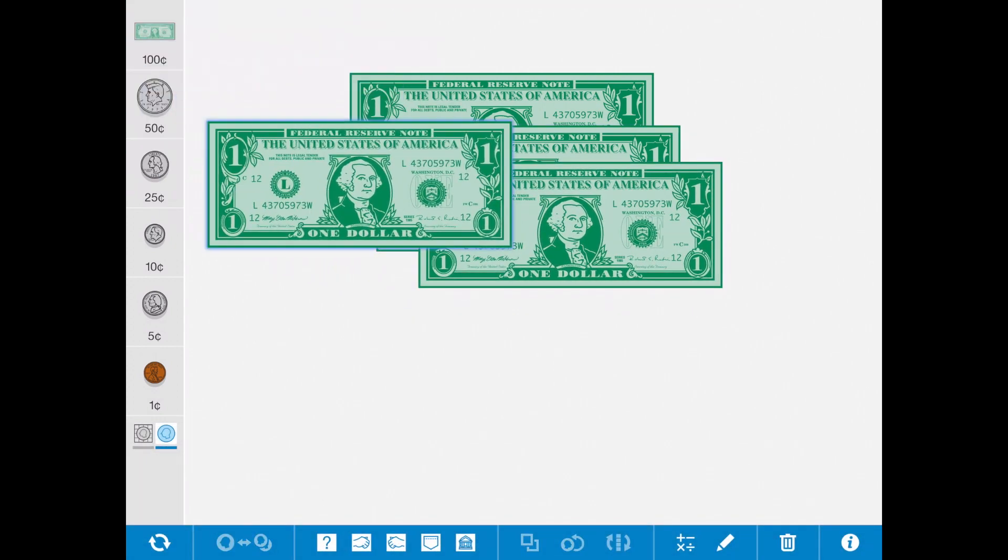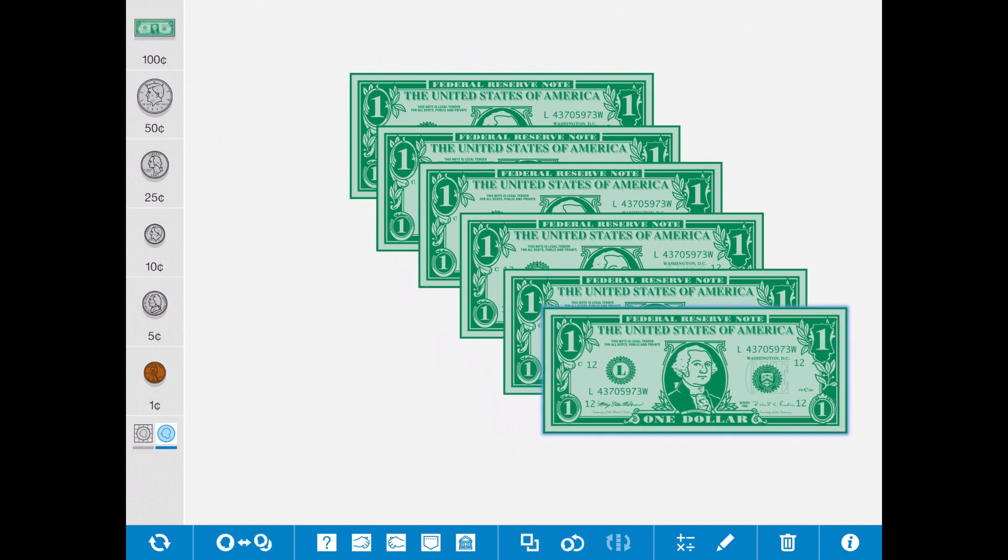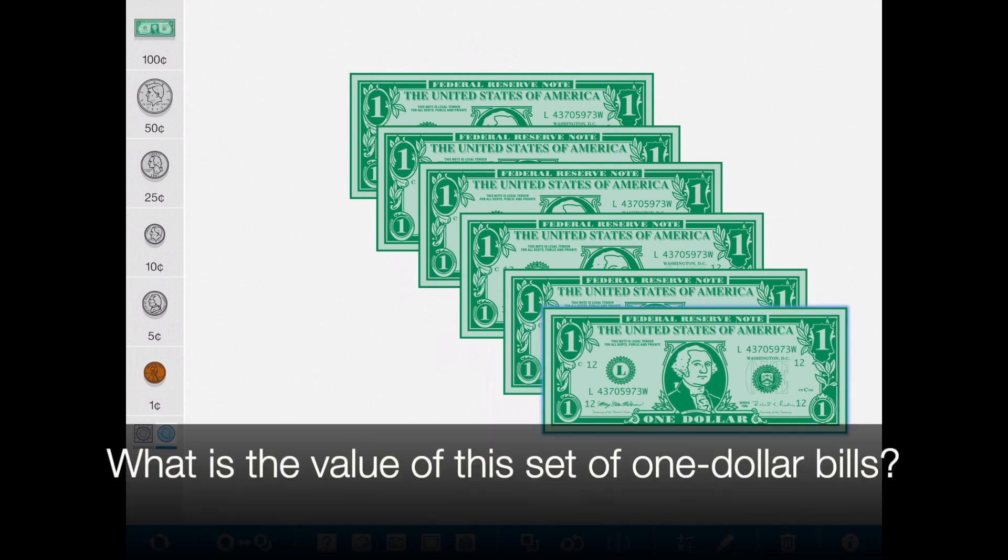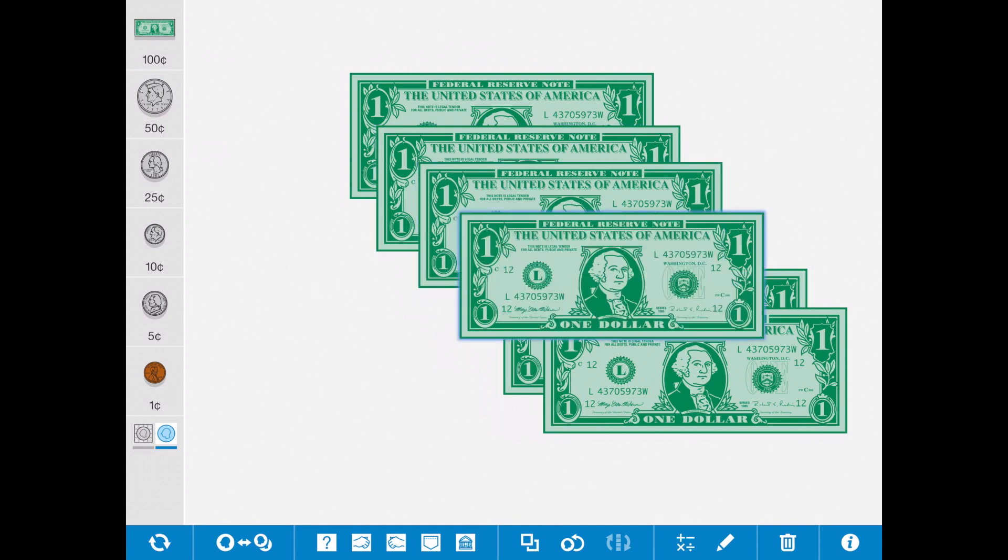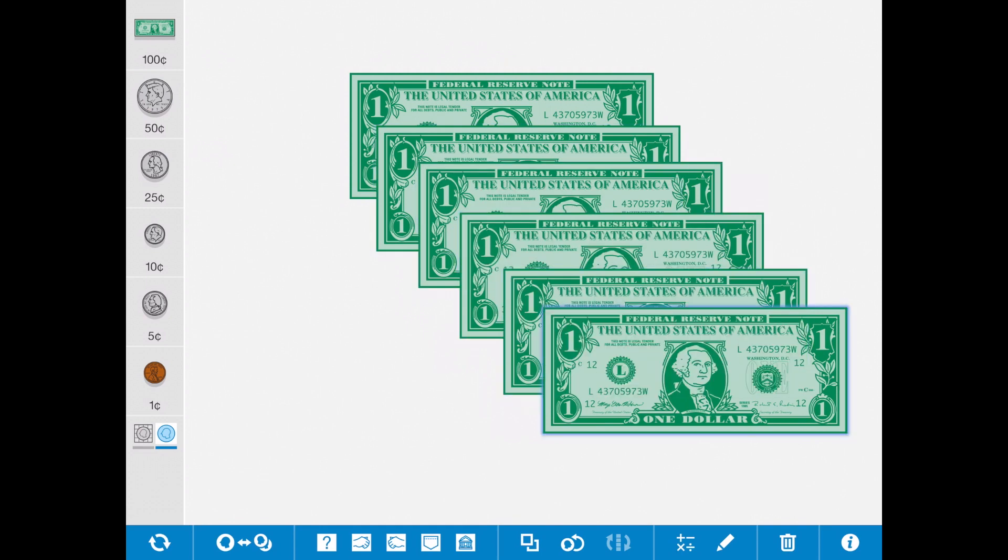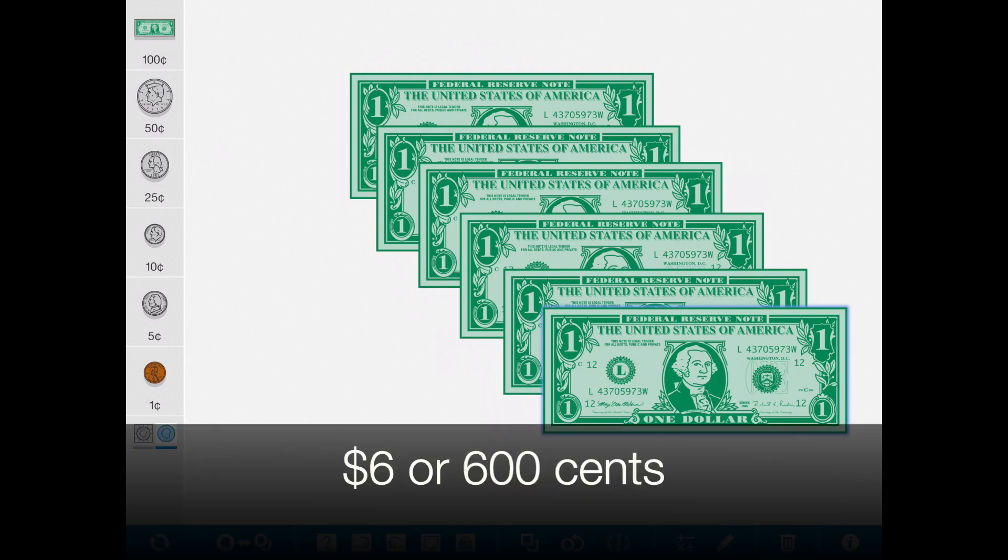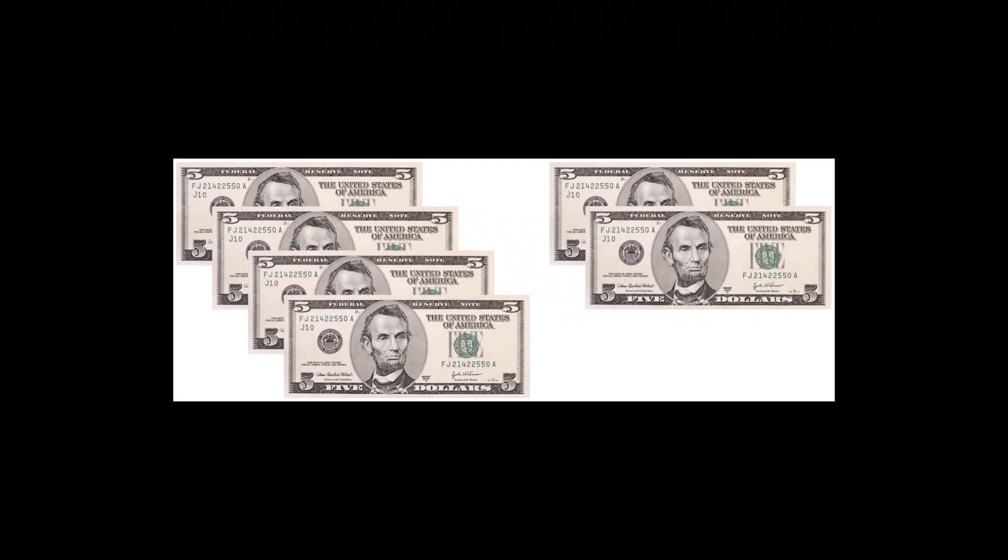If I add a few more, what is the value of this set? You can see there's one, two, three, four, five, six. Six one dollar bills, which is six dollars. Let's try it with some other bills.